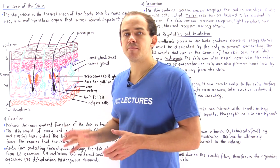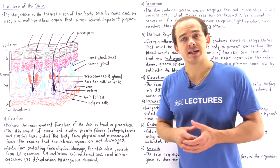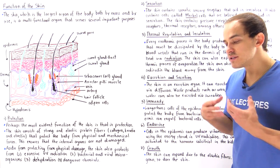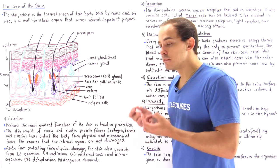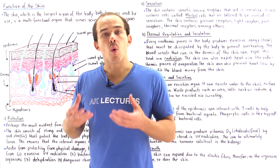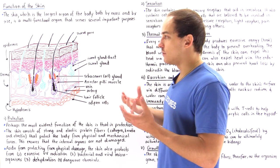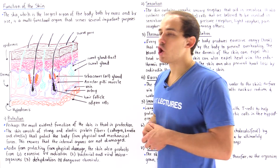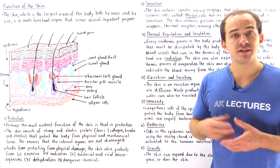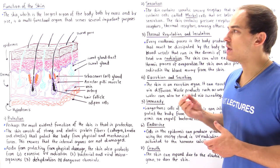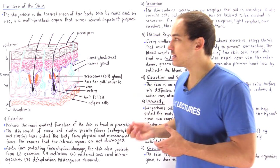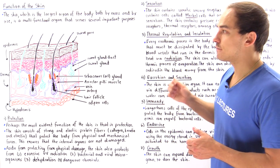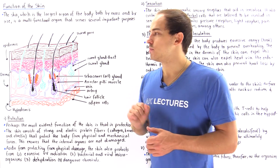Function number one of the skin is perhaps the most obvious: the skin creates a physical barrier that protects us from a wide range of harmful things. Keratinocytes in the epidermis secrete a protein fiber known as keratin, which gives the skin its strength and also makes our skin impermeable to water.